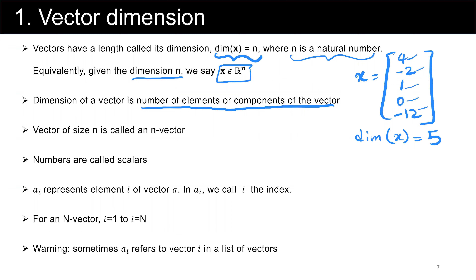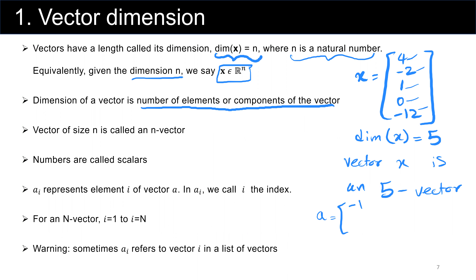A vector of size n is called an n-vector. Numbers are called scalars. A sub i represents element i of vector a. For example, if vector a has elements minus 11 and 23, then the first element is minus 11 and the second is 23. For an n-vector, i goes from 1 to n. For this two-vector, we have only a sub 1 and a sub 2.